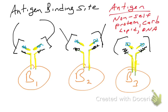We should define the term antigen. An antigen is any molecule that would be non-self and would be recognized by the immune system. For antibodies or immunoglobulins, they can bind anything — proteins, carbohydrates, lipids, even nucleic acids such as DNA. The three-dimensional shape in the antigen binding site could theoretically fit any three-dimensional shape of any molecule.